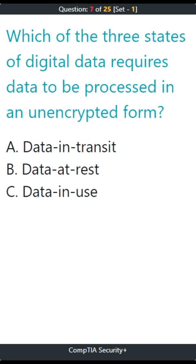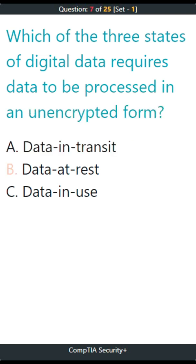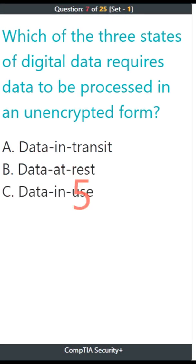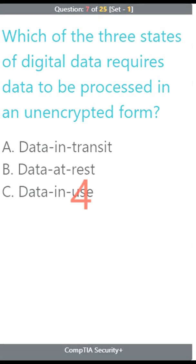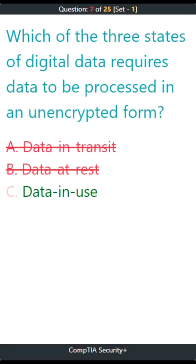Question 7. Which of the three states of digital data requires data to be processed in an unencrypted form? A. Data in transit, B. Data at rest, C. Data in use. The correct answer is C. Data in use.